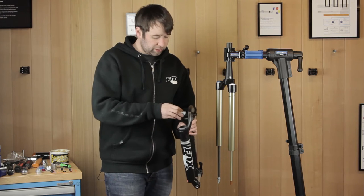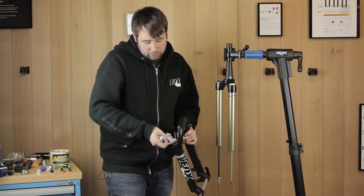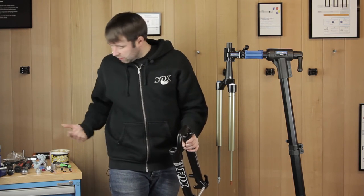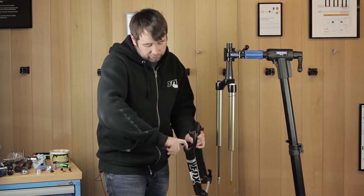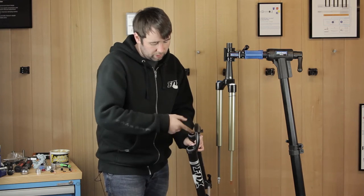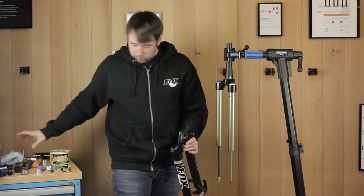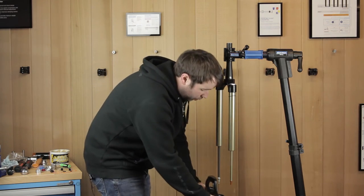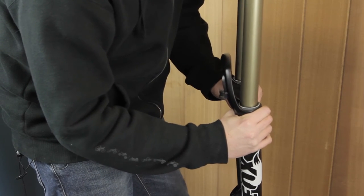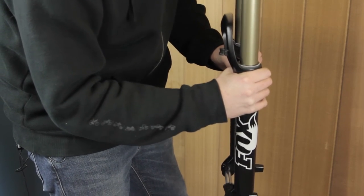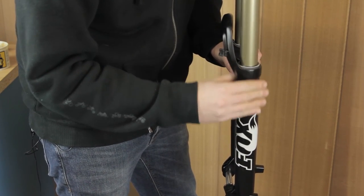So now I'm ready to fit the lowers. I'm just going to give the seals a quick wipe out with some clean soft paper towel. And once they're clean, again using your Slick Honey, just a small amount of Slick Honey, just wipe around on the inside of the wiper seal. Once you have done that, wipe off any excess grease on the top of the seal. Now you're ready to fit the lowers. Slide them onto the forks and when the stanchion, just so you make sure you haven't pinched the foam ring and they're moving freely.